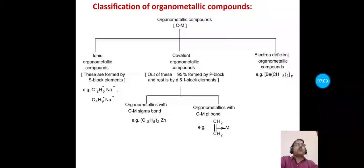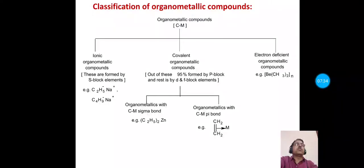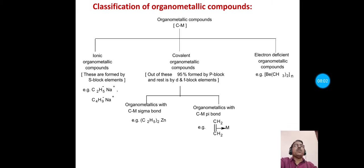Ionic organometallic compounds are formed by s-block elements, and these are formed by the delocalization of negative charge of the organic anion on the carbon atoms of an unsaturated carbon chain — either a ring or a chain. The exception is that lithium, due to its small size, cannot form ionic organometallic compounds; lithium forms covalent organometallic compounds. Alkali and alkaline earth metals form ionic organometallic compounds. Examples include ethyl sodium and butyl sodium. Some transition metals, like manganese, also show ionic organometallic behavior.